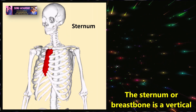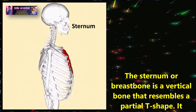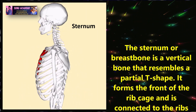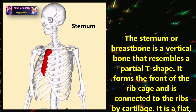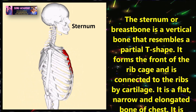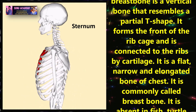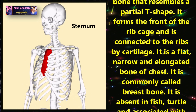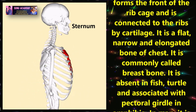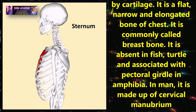Children, let us discuss about sternum. The sternum or breast bone is a vertical bone that resembles a partial T-shape. It forms the front of the ribcage and it is connected to the ribs by cartilage. It is a flat, narrow and elongated bone of chest. It is commonly called breast bone.